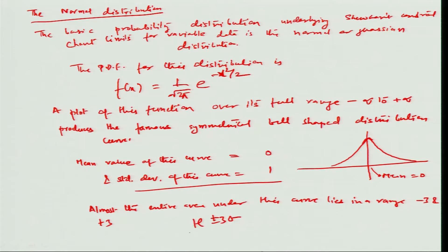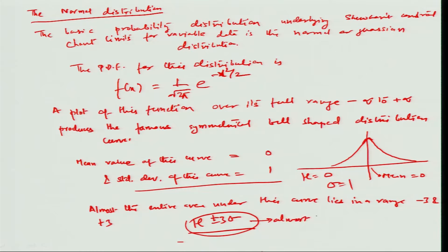Typically within μ ± 3σ, with σ = 1 and μ = 0 in this particular case, almost 99 percent of the values would be present.